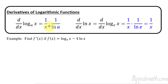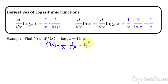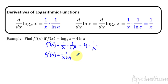Let's try another quick example. The derivative is going to equal 1 over x times 1 over the natural log of the base, which in this case is 4, minus 4 times the derivative of natural log of x, which is just 1 over x. We can clean this up a little bit and the derivative is 1 over x natural log of 4, minus 4 over x. I'm writing it out in the video so you can see exactly how I get there.